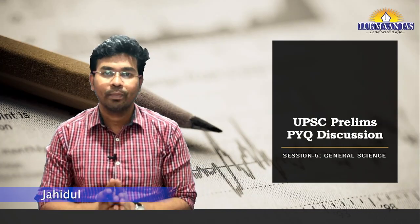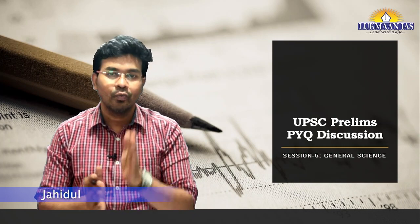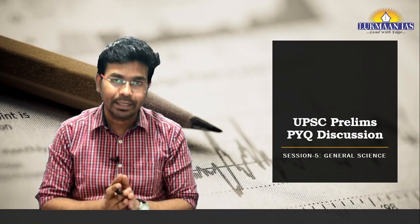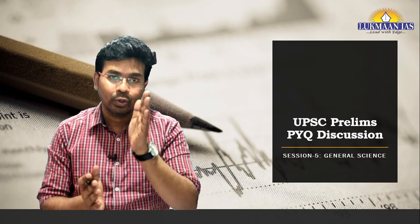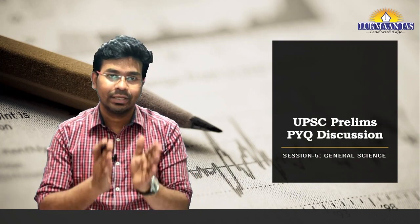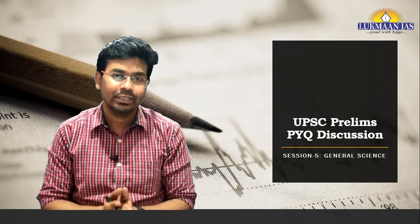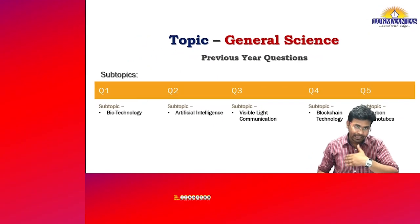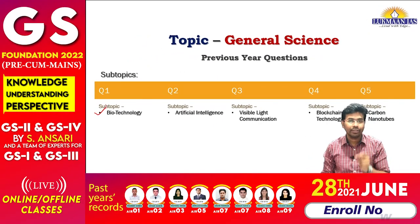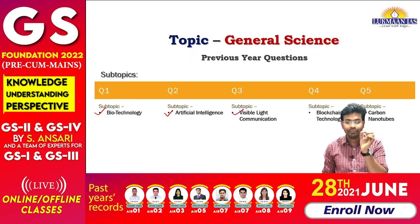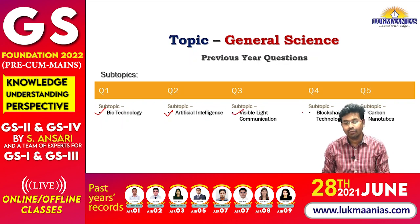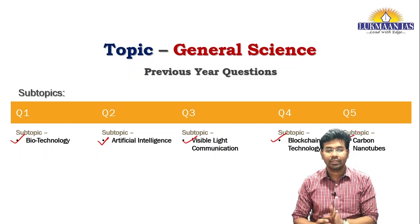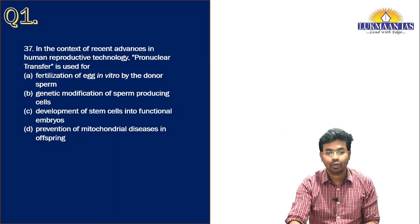Hello everyone, welcome to Lukman IAS. As you know, we are discussing the previous year questions of UPSC preliminary examination. Today we are going to discuss general science, which is also known as science and technology. The topics we will cover include biotechnology, artificial intelligence, visible light communication, blockchain technology, and carbon nanotubes. Let us quickly discuss these topics one by one.